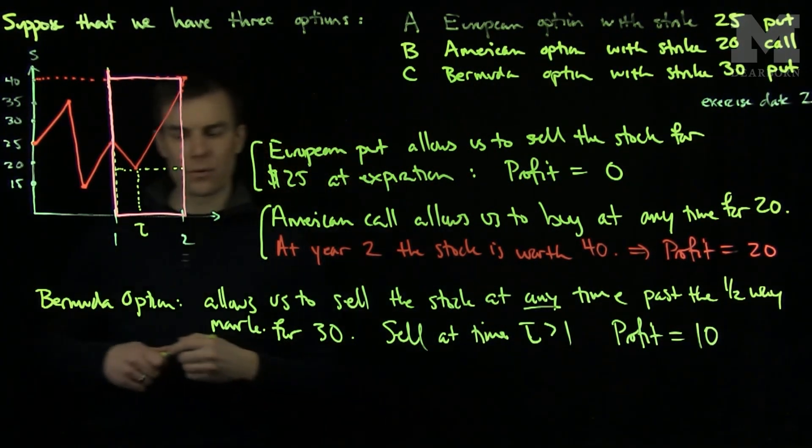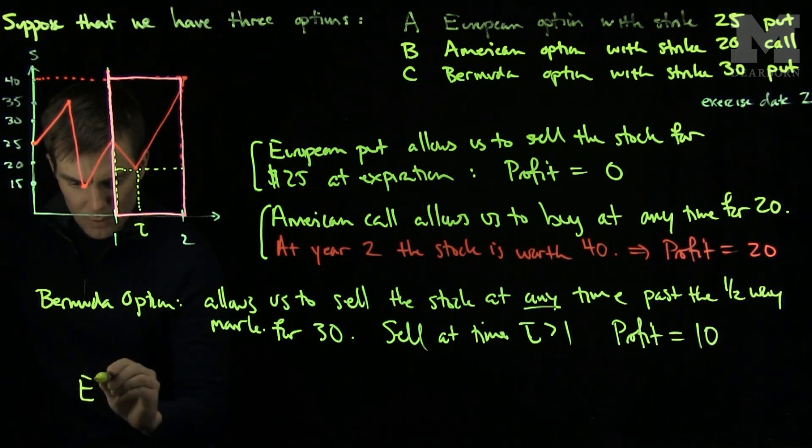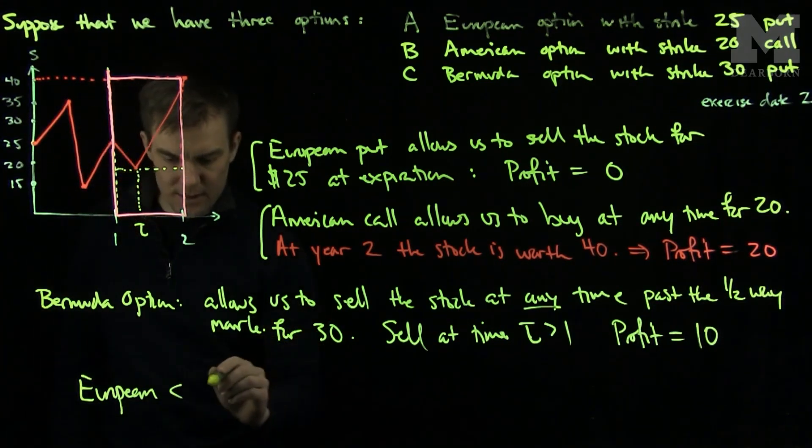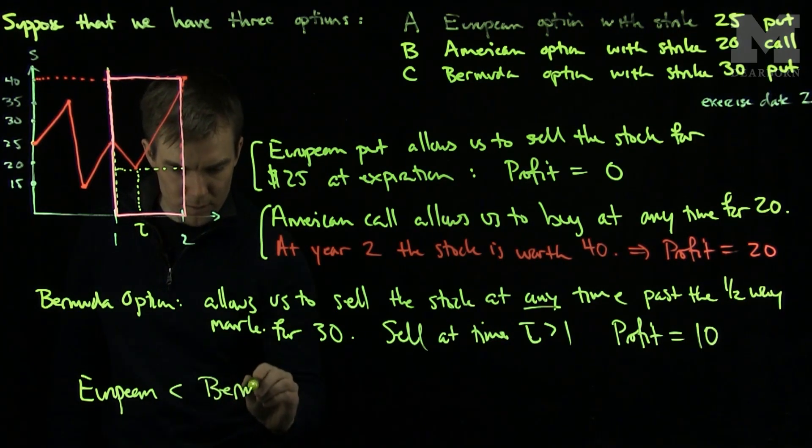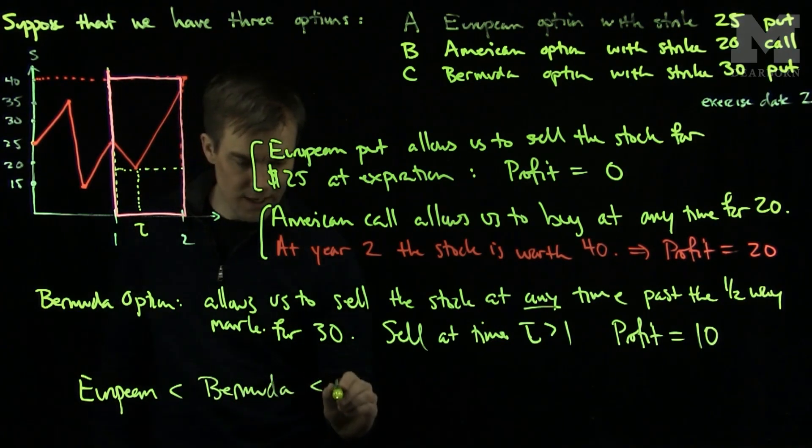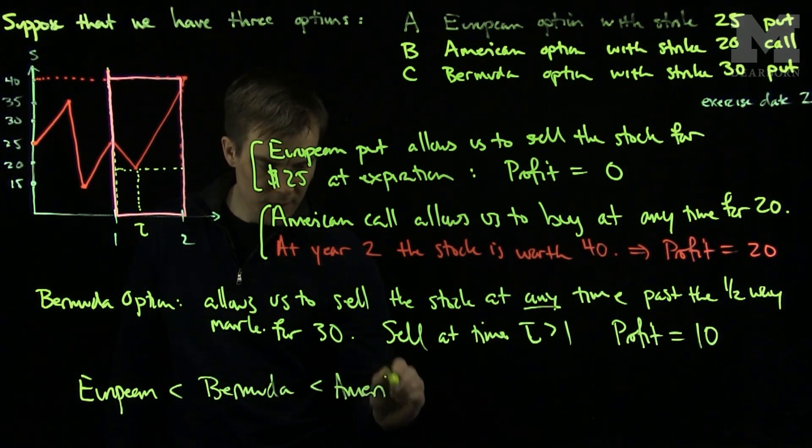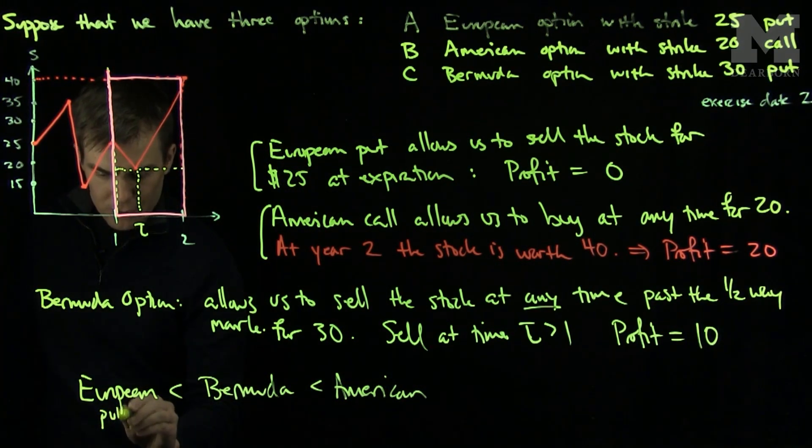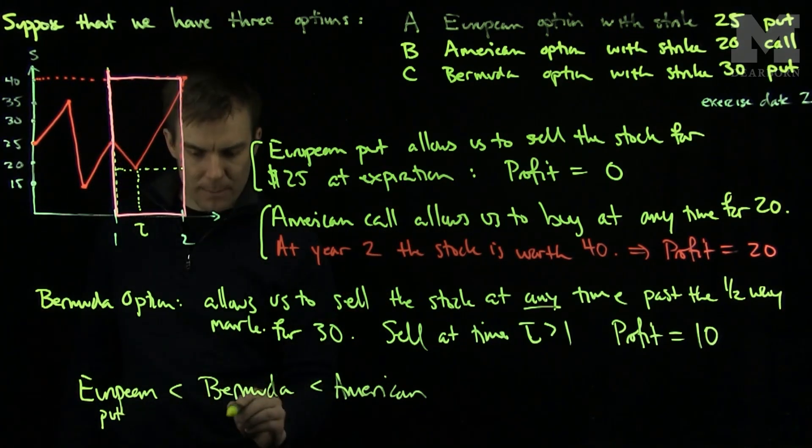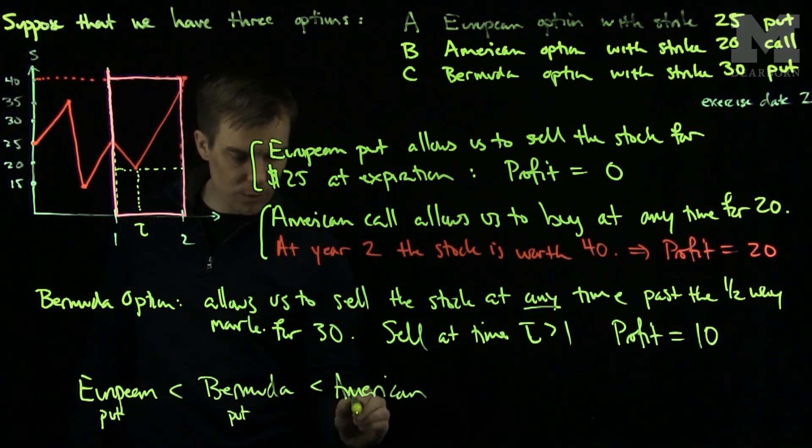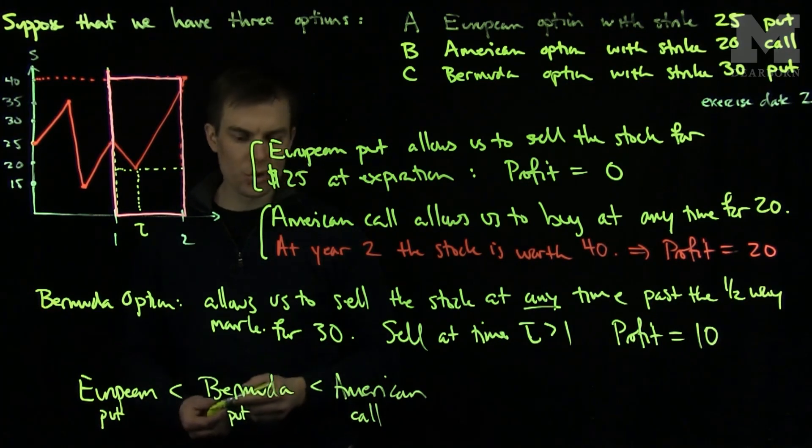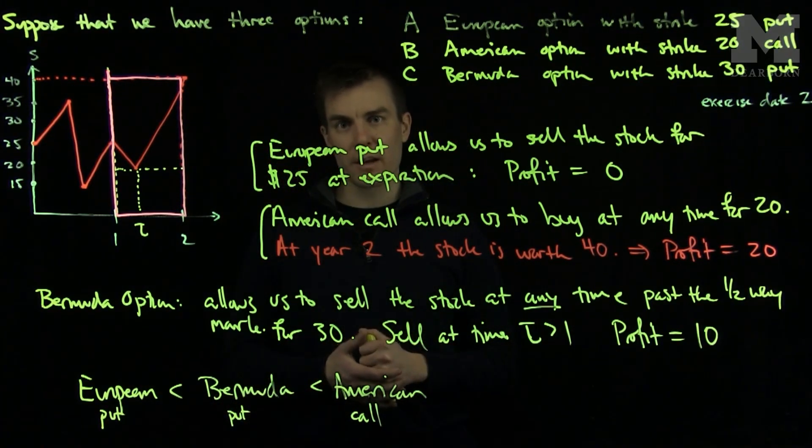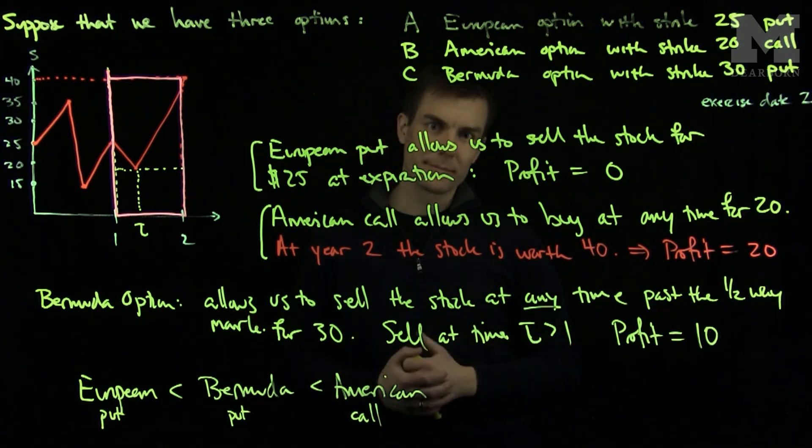So in this case, we have the following ranking. The European option that we bought is less than the profit of the Bermuda, which is less than the profit of the American. It's important to note that the European was a put option, the Bermuda was a put option, and the American was a call option. So in this situation, the American call option yields the most profit, the Bermuda yields the intermediate, and the European yields no profit. Thank you very much.